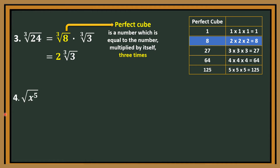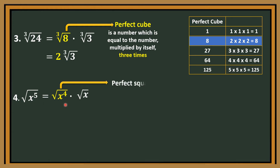Number 4: square root of x raised to the fifth power. 5 is not a perfect square, so we need to factor it wherein one factor is a perfect square. The exponent needs to be divisible by the index. The index here is 2, so we need the exponent to be divisible by 2. The first factor is square root of x to the fourth power, and the other factor is square root of x. Because 4 plus 1 equals 5, and x to the fourth power is the perfect square.